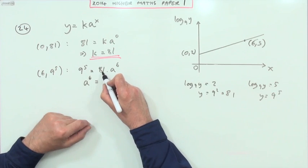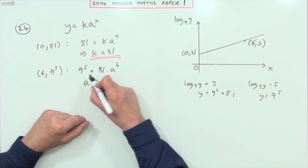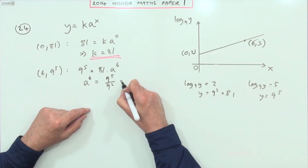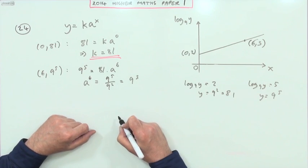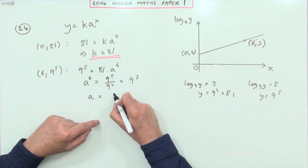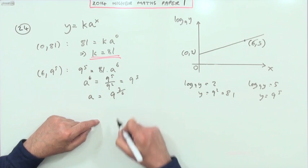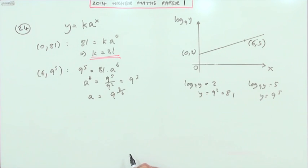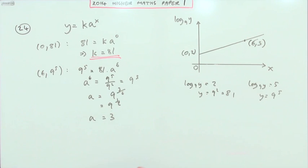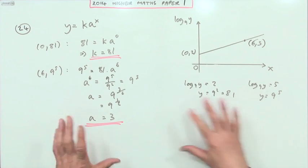So I'll just do a bit of moving about because that's 9 squared. So taking that and cross dividing means I've got 9 to the 5 over 9 squared, which is 9 to the power 3. And then a will be, take the sixth root of that, so that means it'll be over 6 in the index, which is 9 to the power 1 half, which means a is 3.